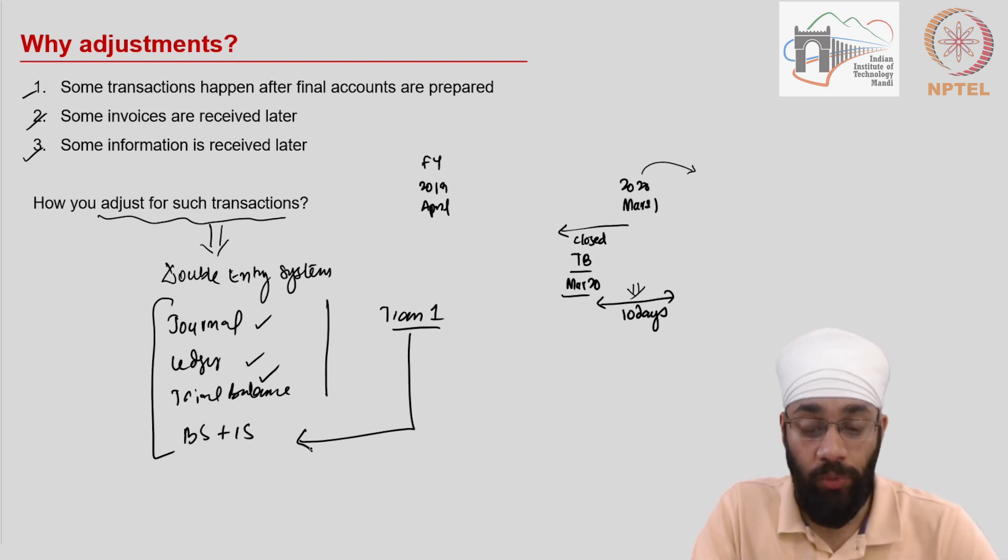So this is what we are going to do in the next few videos. We'll look at a set of transactions and we'll make the adjustments. I'll see you in the next video where we pick up a trial balance, look at some additional information, and prepare the balance sheet and income statement from this information.